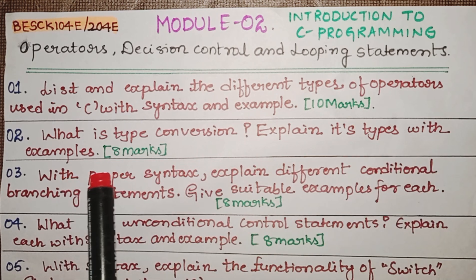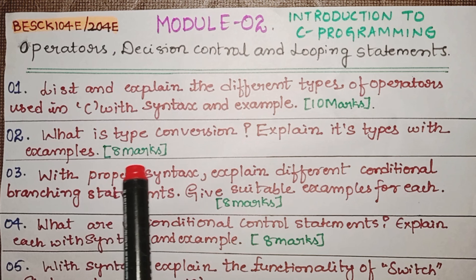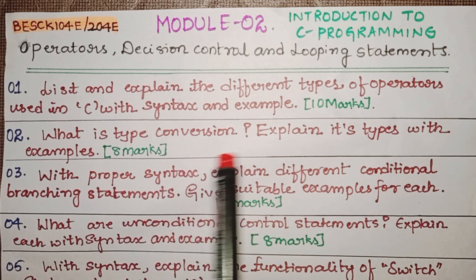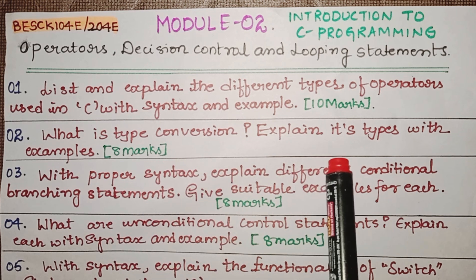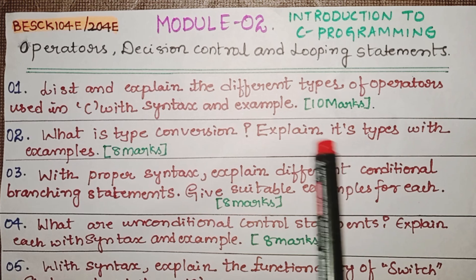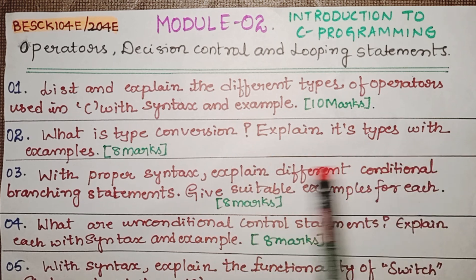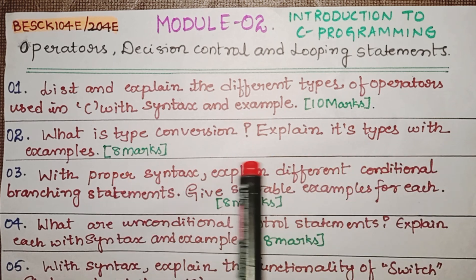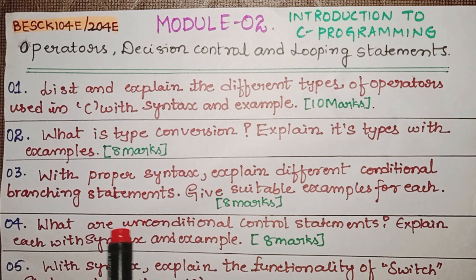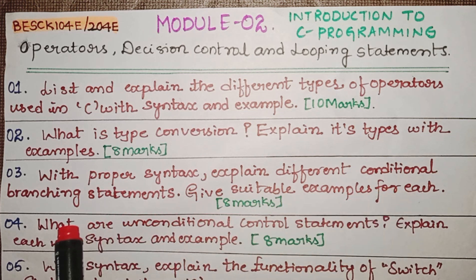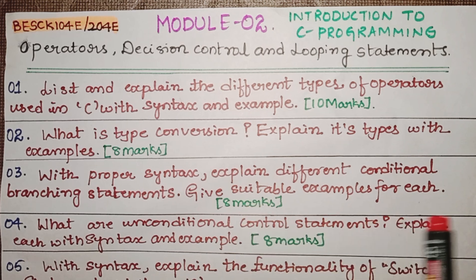For type conversion, you should write the definition and explain the different types of type conversion in the C program with suitable syntax and example. The next question is: with proper syntax, explain different conditional branching statements and give suitable examples for each.